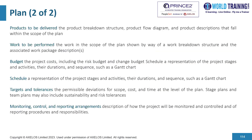Further, the plan document contains what products are to be delivered, including a product breakdown structure, flow diagram, and the product descriptions that fall within the scope of the plan. There is also a section on the work to be performed, shown by way of a work breakdown structure and the associated work package description. Budget covers the cost of the project, including the risk budget and the change budget. A schedule provides a representation of the various project stages and activities along with durations and sequence, such as a Gantt chart.